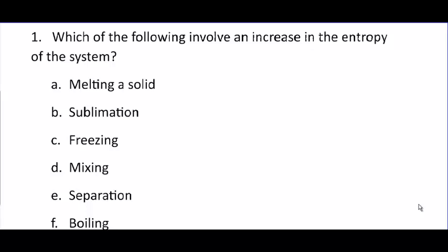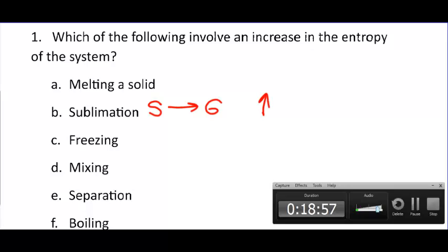Increases is correct — very good. Sublimation is going directly from the solid phase to the gas phase. The gas phase has the least order and the most entropy, so you're increasing the entropy there.